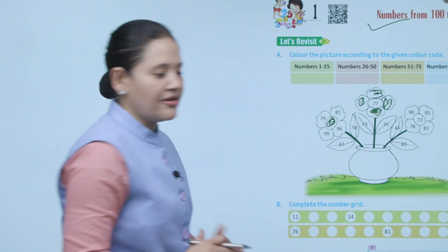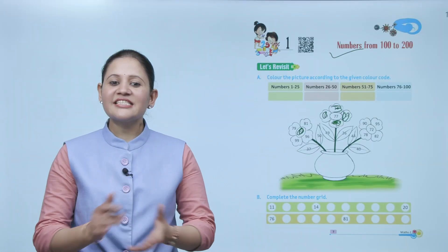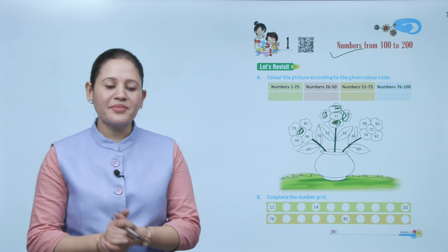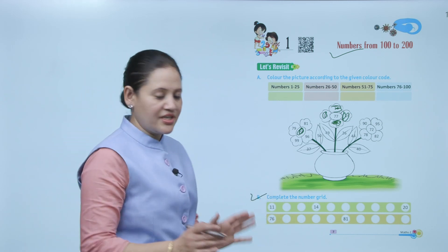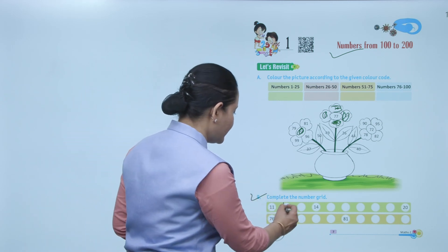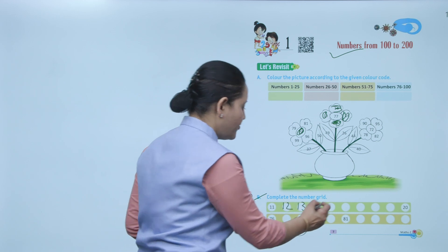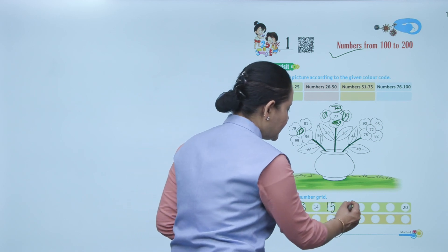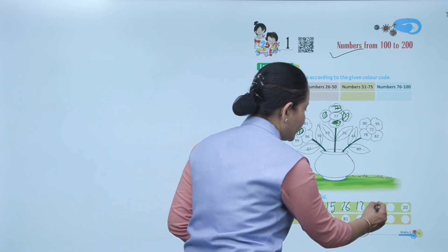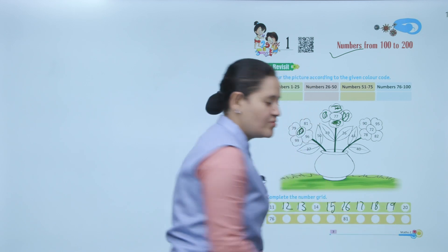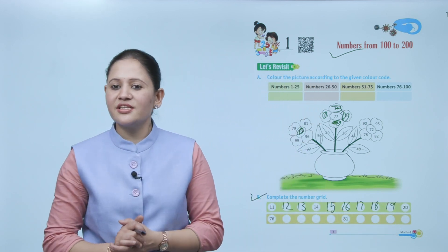According to the given color scheme, you will color it. Next is: complete the number grid. Here you have to do simple counting. First is number 11, then 12, 13, 14, 15, 16, 17, 18, 19, and 20. Like this, you have to write the numbers.